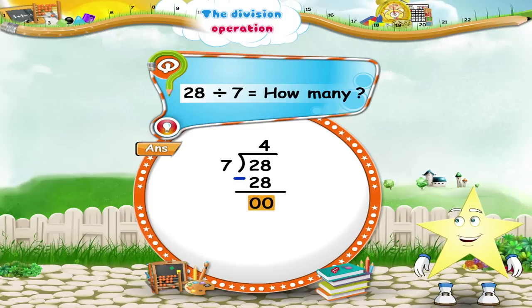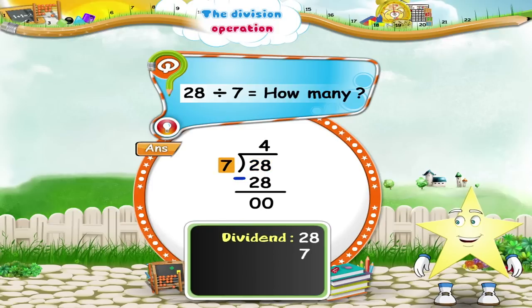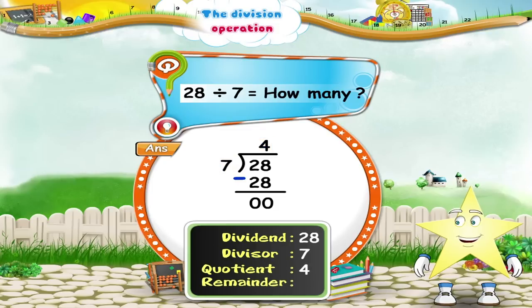So Starry, when we divide 28 by 7: 28 is the Dividend, 7 is the Divisor, the quotient is 4, and the remainder is 0.